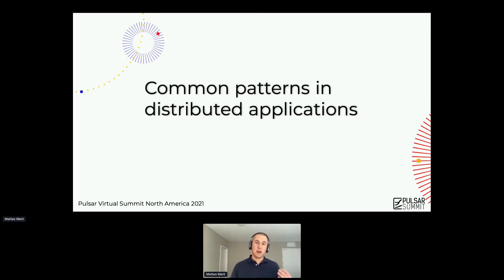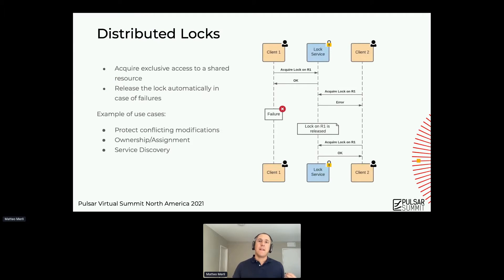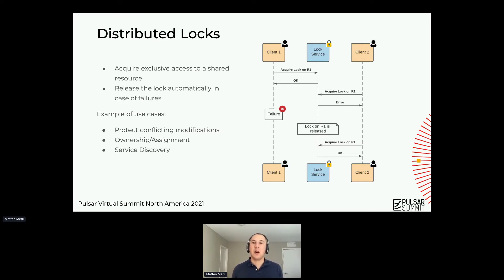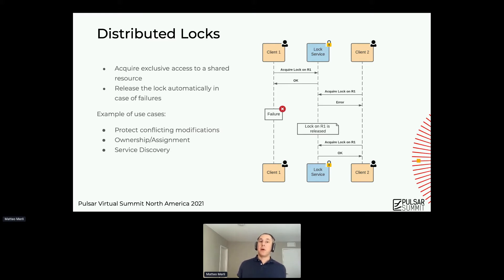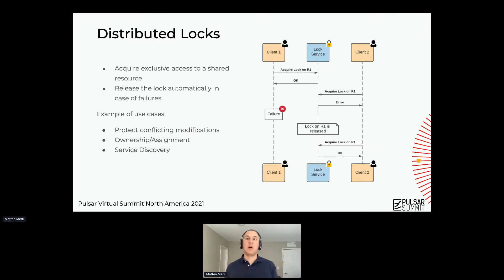To start with common patterns for distributed applications, one of the most common ones is distributed locks. Everyone is familiar with locks and mutexes on a single node. If you're using Java or any other language, there are constructs to acquire locks on a particular resource. You take a lock to have exclusive access to a shared resource. If you are in a single process, that resource could be a variable. If you are in a distributed context, this resource could be writing to a file on an NFS mount, or writing to a cell in a database.